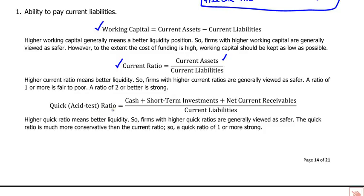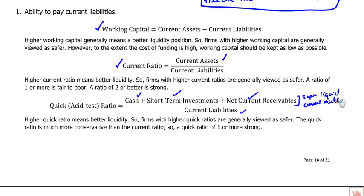The quick ratio is a conservative version of the current ratio — it takes out inventory and other items, looking only at cash, short-term investments, and current receivables less the allowance, over current liabilities. The items in the numerator are super liquid current assets: they are cash or can be converted to cash very soon with a little discount. The higher the quick ratio, the better in terms of liquidity.